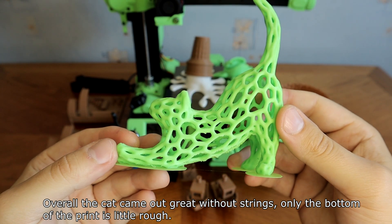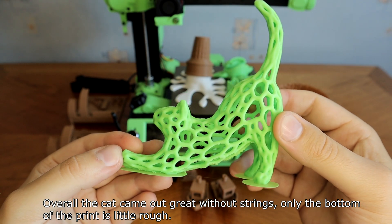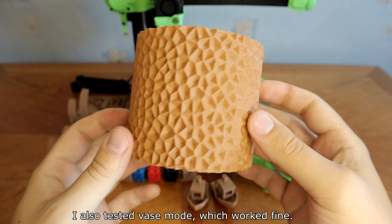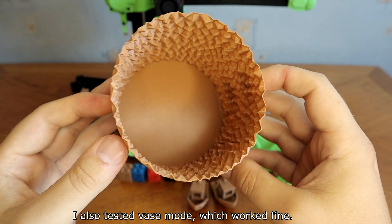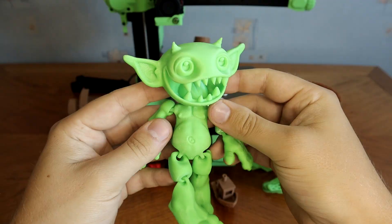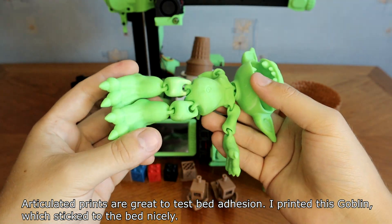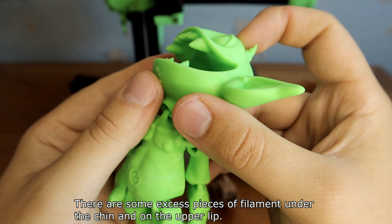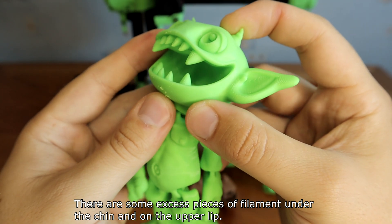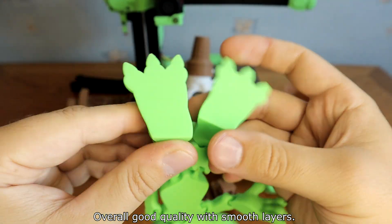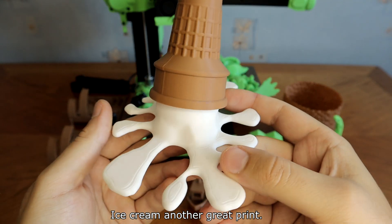Overall the cat came out great without strings, but the bottom of the print is a little bit rough. I also tested vase mode, which worked fine. Articulated prints are great to test bed adhesion. I printed this goblin, which stuck to the bed nicely. There are some excess pieces of filament under the chin and on the upper lip. Overall good quality with smooth layers. Ice cream, another great print.